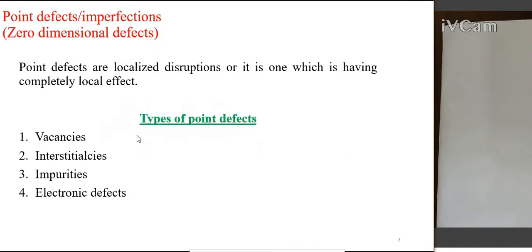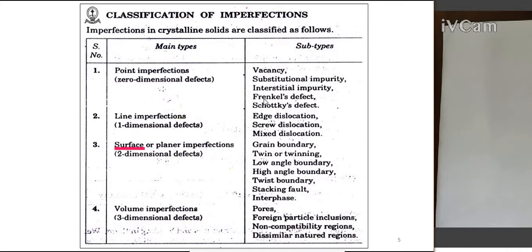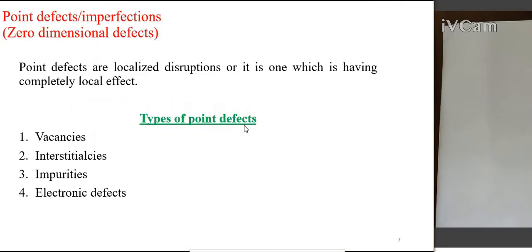Point defects are localized disruptions — they are completely local in effect. The defect is localized in nature and is not propagating throughout the solid; it is localized in the atomic structure. The subtypes of point defects are vacancies, substitutional impurity, interstitial impurity, Frenkel defect, Schottky defect, and some electronic defects such as semiconductor doping.